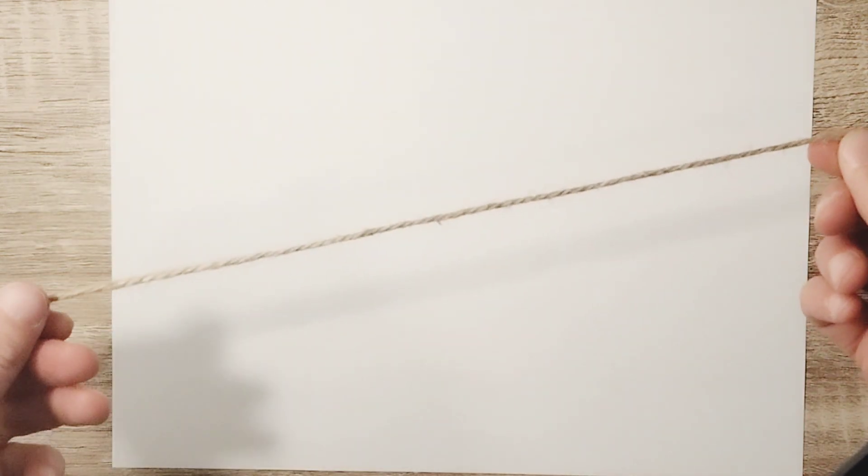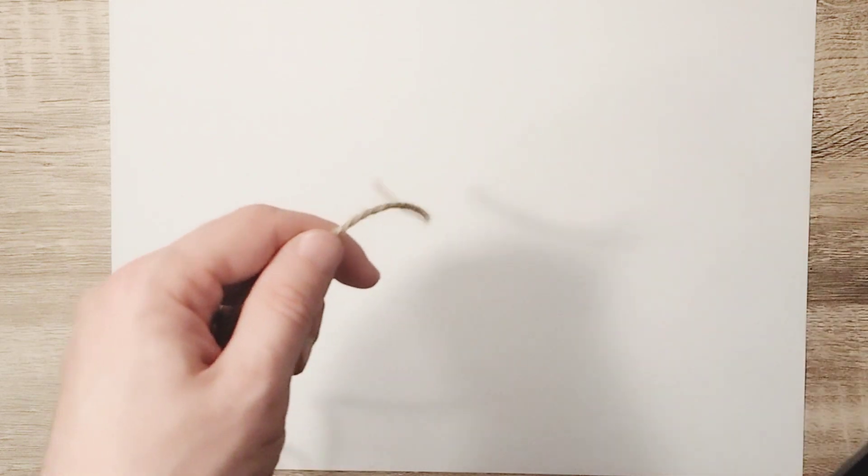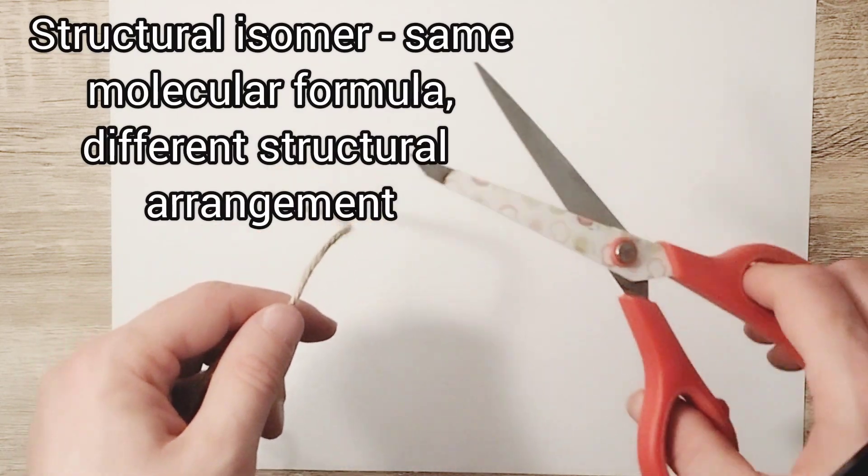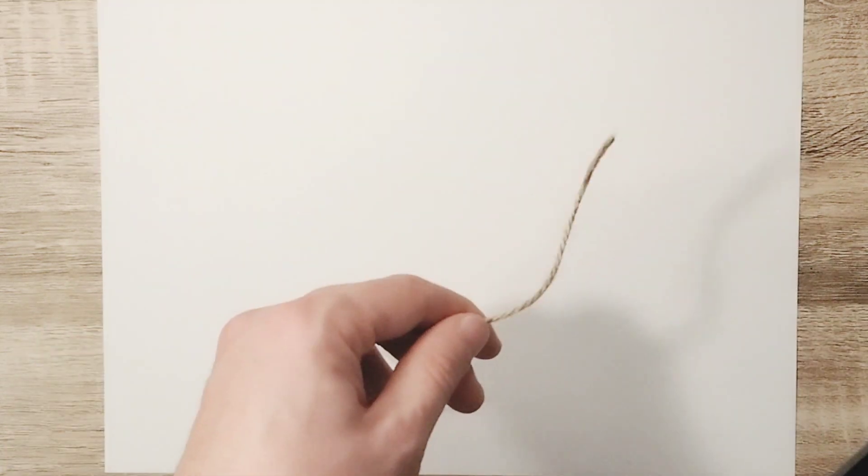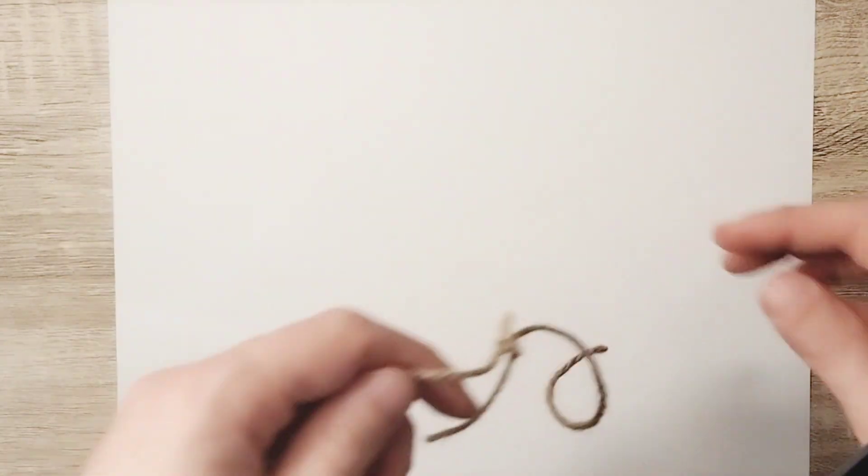Okay, let's try a different thought experiment. This time we're going to look at an isomer, a molecule with the same molecular formula but a different structure arrangement. In this case my string will have the same amount of string but a different arrangement of that string.